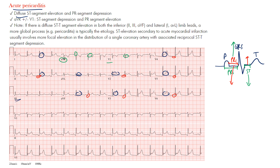So those are the characteristic changes you expect to see. There are a few criteria to look out for: the characteristic pleuritic, positional chest pain, the EKG changes, and evidence of any effusion around the heart as well. Those are the characteristic findings.